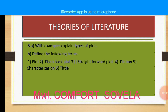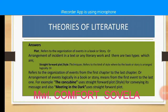Another part of form is plot. The question can be asked: with examples, explain types of plot, and define the following terms — plot, flashback plot, and straightforward plot. By way of answer, plot refers to the organization of events in a literary work — in a book or story — and can sometimes be defined as the arrangement of incidents in a text or literary work.